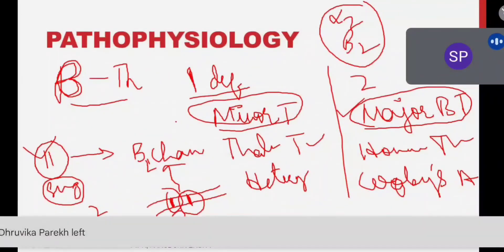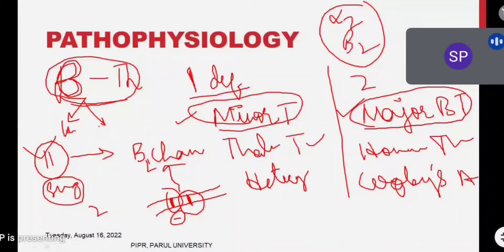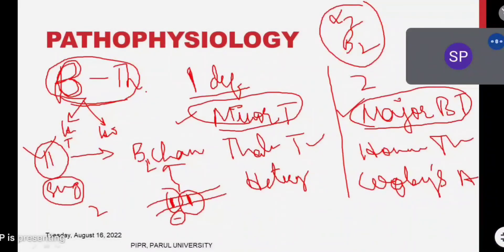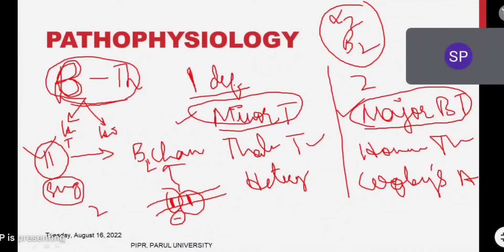In beta thalassemia we have two types: minor and major — or heterozygous and homozygous. In minor beta thalassemia, only one beta chain is absent; one beta chain is still present along with both alpha chains. In major beta thalassemia, both beta chains are absent, and the dominating alpha chains cause severe hemolysis. Minor thalassemia patients will not have significant symptoms, whereas major thalassemia patients will have symptoms due to rapid RBC breakdown.